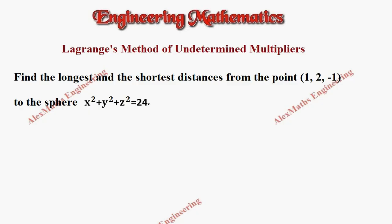Hi students, this is Alex. In this video we are going to discuss Lagrange's method of undetermined multipliers to find the longest and the shortest distances from the given point, which is (1, 2, -1), to the sphere whose equation is x² + y² + z² = 24.